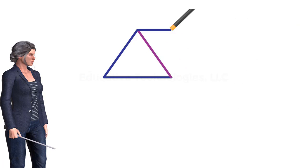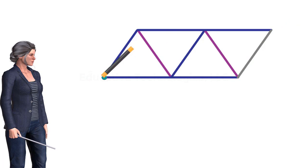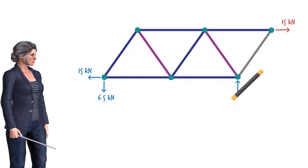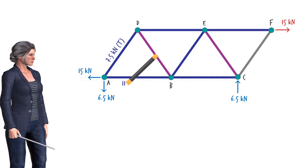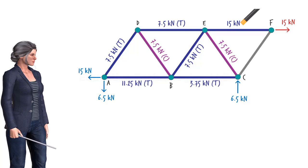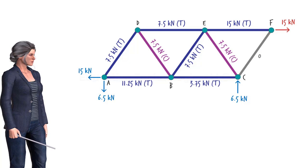Let's summarize the results by writing the force magnitude on the members, and indicate whether a member is in tension or compression. So, the truss has two compression members, six tension members, and one zero force member.